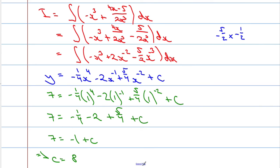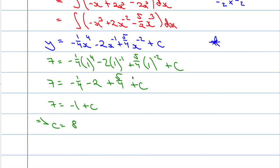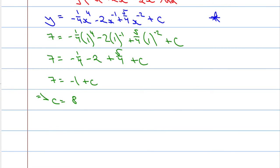Let's go back to the blue line here. So I'm going to substitute c equals 8 in here. And we're going to get this. So we get y equals negative 1 over 4 x to the power of 4 minus 2 x to the negative 1 plus 5 over 4 x to the negative 2. And c is now 8. So plus that 8.